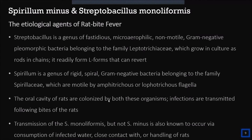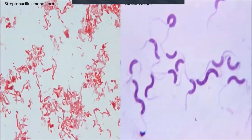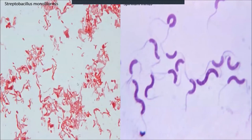Both Spirillum minus and Streptobacillus moniliformis are found as normal flora in the oral cavity of rats, and most infections are transmitted through rat bites. Streptobacillus moniliformis can also be transmitted through consumption of water infested by rats or through close contact with or handling of rats — a mode restricted to Streptobacillus moniliformis but not Spirillum minus. The pictures show bacilli occurring in chains with some swollen L-form shapes on the left, and spiral bacteria with flagella on either end on the right.